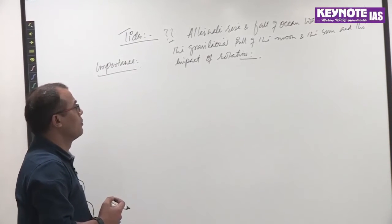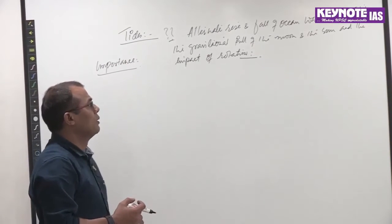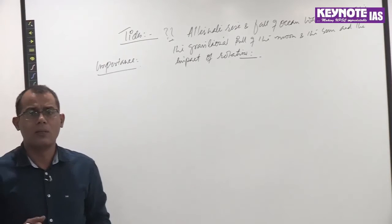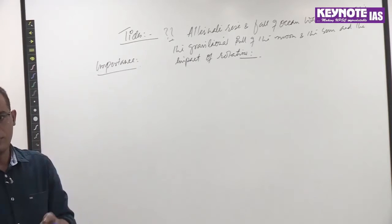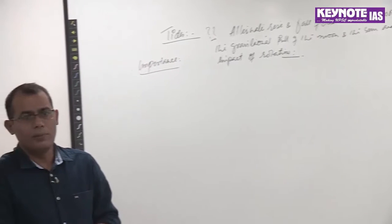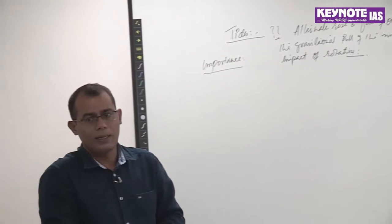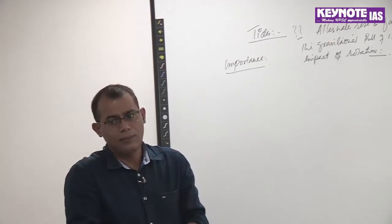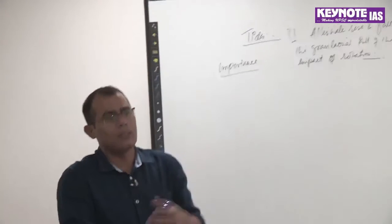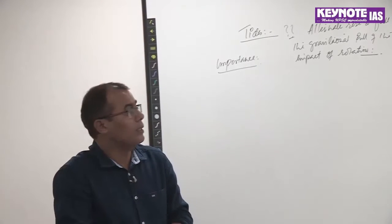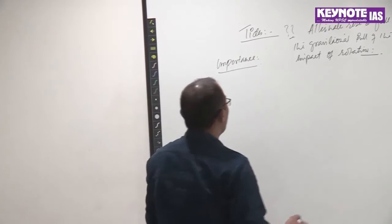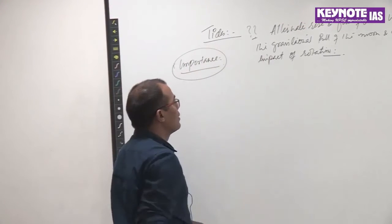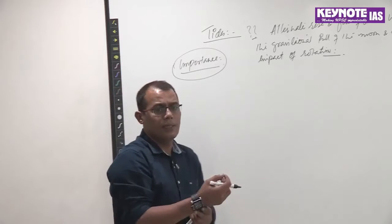Due to the gravitational pull of the moon and sun, because of the pulling effect, water is pulled towards the moon — whenever a body behaves like a magnet, the rest of the portion responds as per the magnetic property of that heavenly body. Let us first begin with the importance of tides.